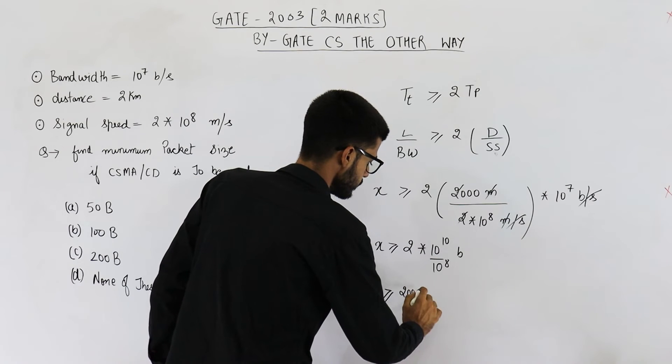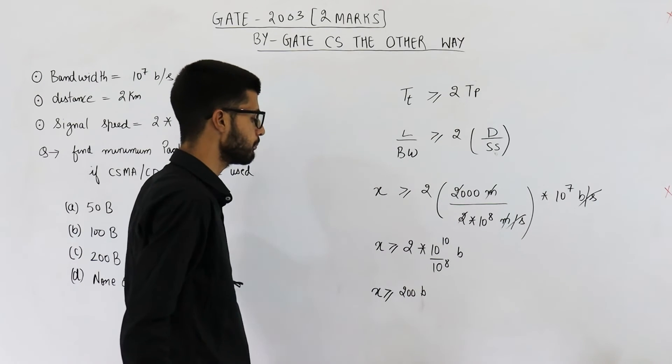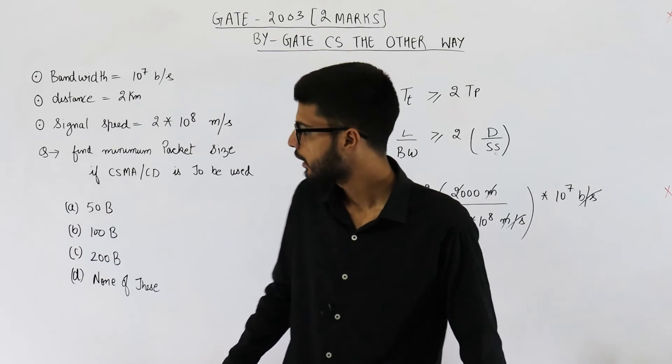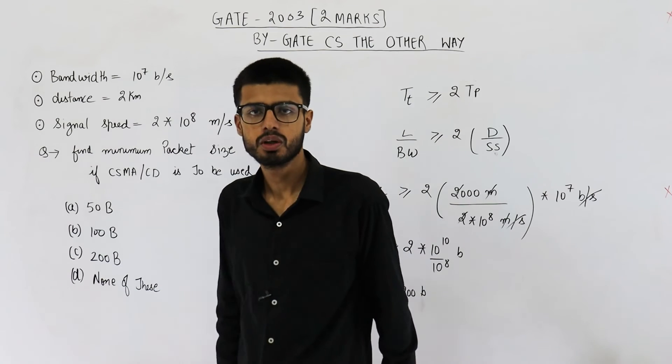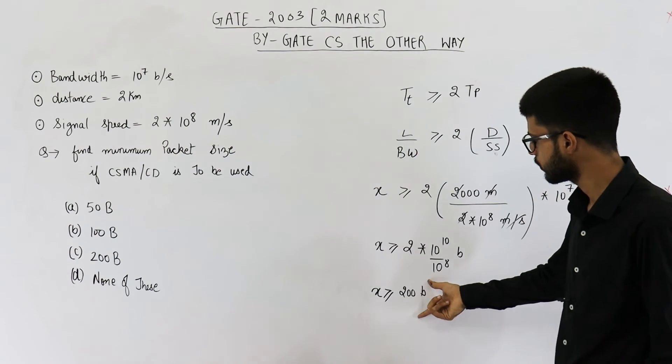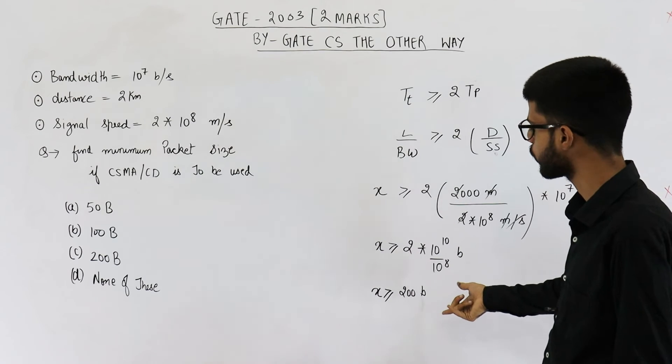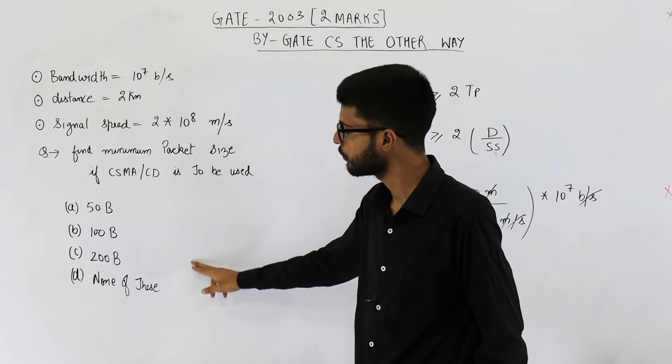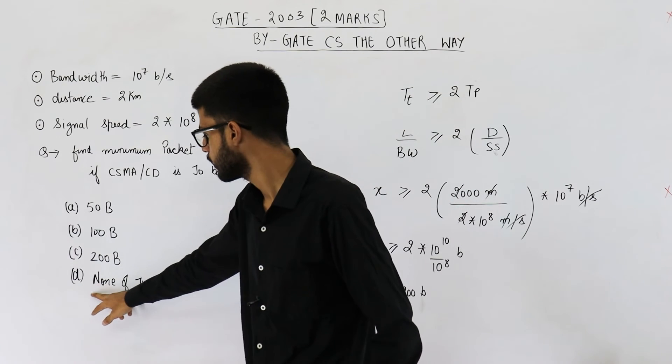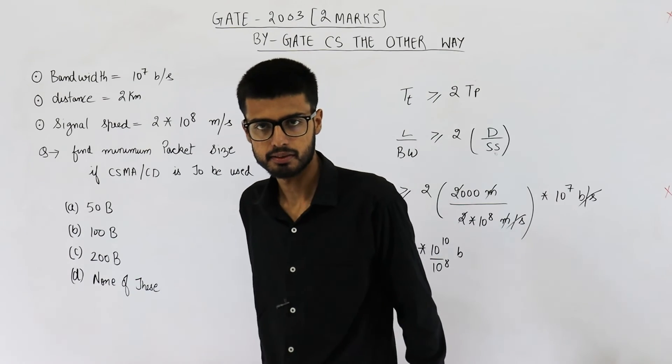So you can see the minimum packet size is 200 bits and all of the options are given in bytes. So let us convert bits into bytes. If you divide it by 8 you are going to get 25. Yeah, 25 into 8 is 200. So 25 bytes is not present in the options. That means option D, none of these is the answer.